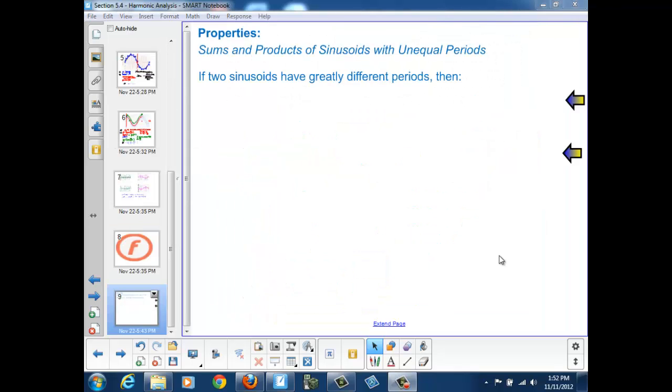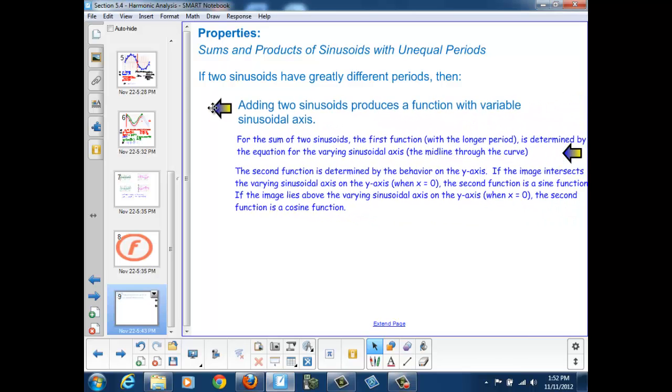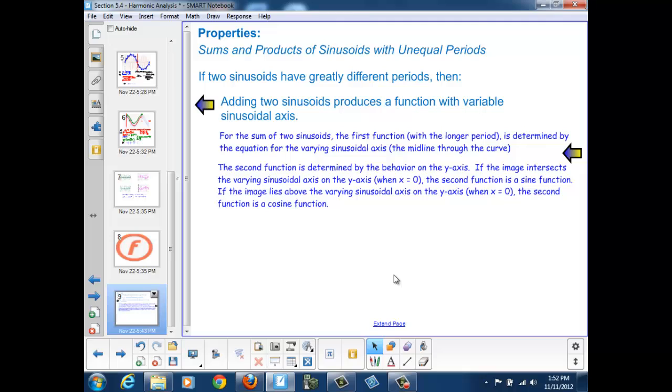Let's recap what we've learned about the sums and products of sinusoids with unequal periods. If two sinusoids have greatly different periods, then adding the two sinusoids produces a function with a variable sinusoidal axis.